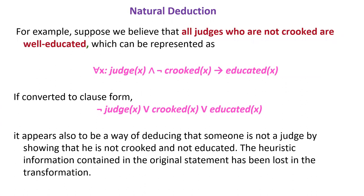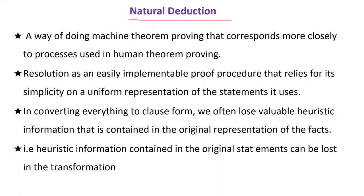For example, suppose we believe that all judges who are not crooked are well-educated. You represent this form as for all x, judge of x and negation crooked of x implies educated of x. If you convert this to clause form, it appears also to be a way of deducing that someone is not a judge by showing that he is not crooked and not educated. The heuristic information contained in the original statement has been lost in the transformation. This is a disadvantage in converting to clause form. Your heuristic information has been lost in this transformation, so you can't produce a natural method of deducing.